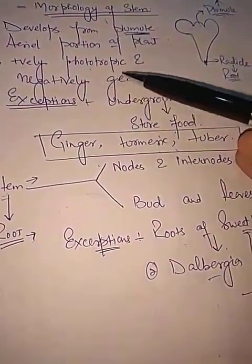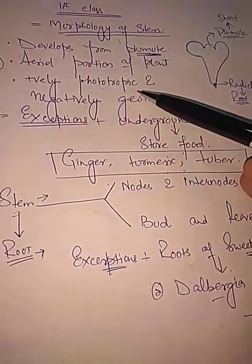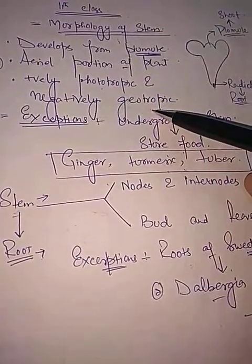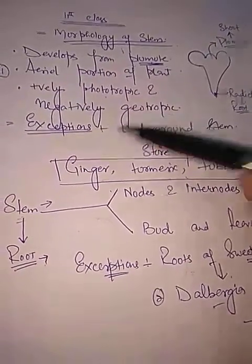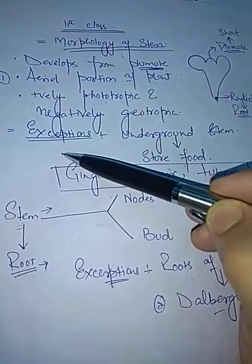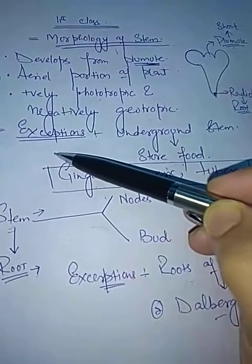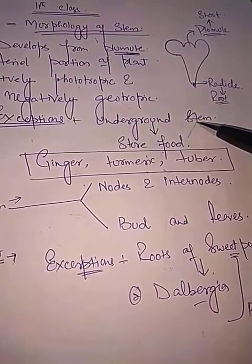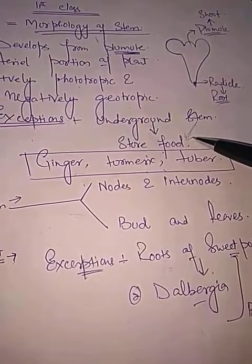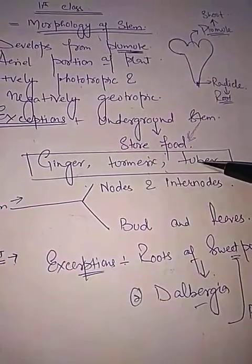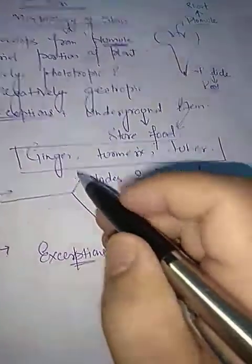The stem is positively phototropic, meaning it grows towards the light source, and negatively geotropic, in contrast to the root. However, exceptions are there. Usually we say stem is the aerial portion of the plant, but there are some stems which are underground, and these underground stems store food.